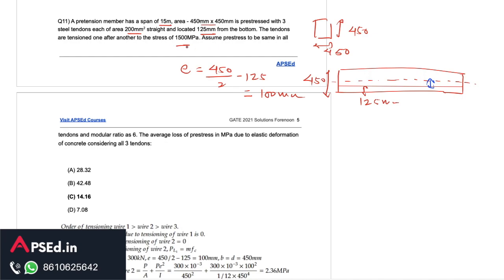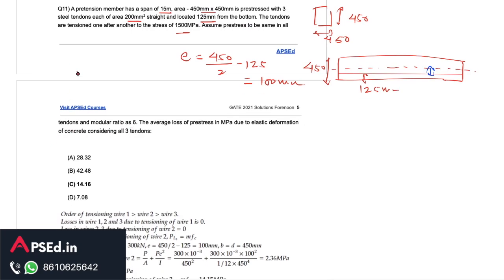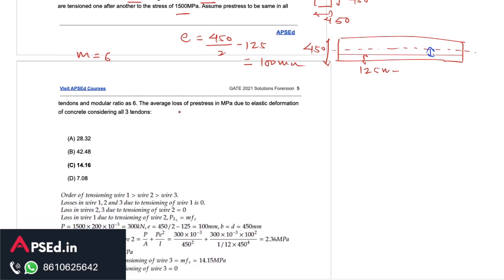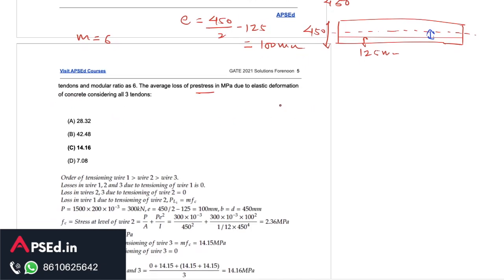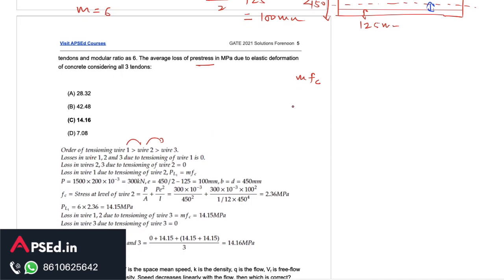This distance here from neutral axis to the tendons comes as 100 mm. Then it has given some further information that stress in these tendons is 1500 MPa and pre-stress is same in all the tendons, modular ratio m is given as 6. We have to find out the average loss of pre-stress due to elastic deformation considering all three tendons. We know this elastic shortening is given as mfc and because this question was for sequential tensioning, these wires are tensioned one after the other one so there will be some loss due to that.